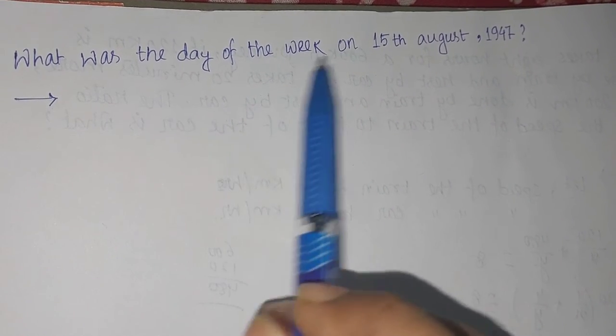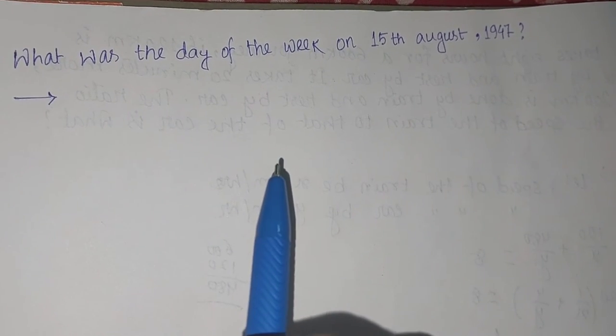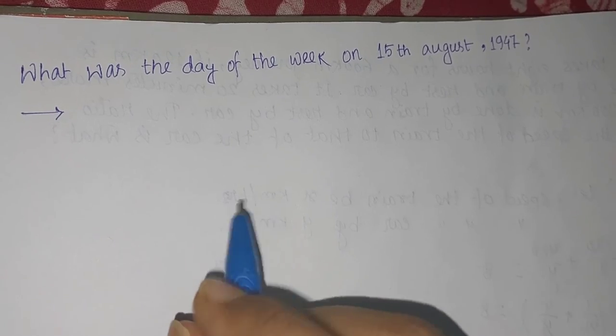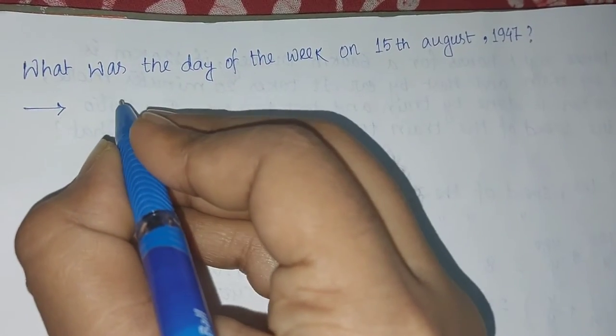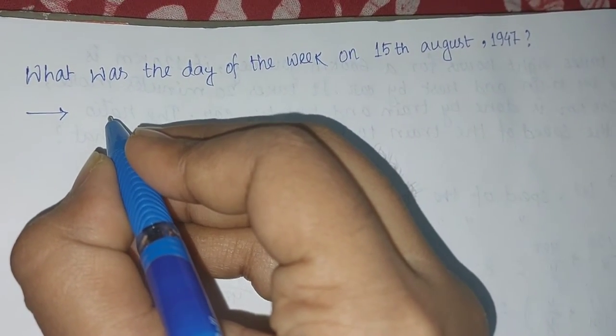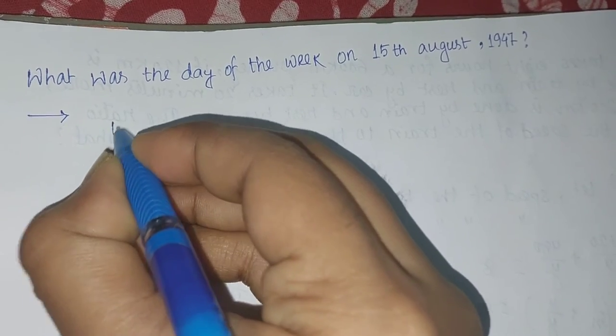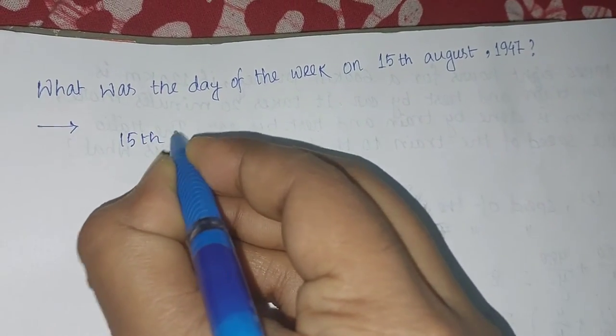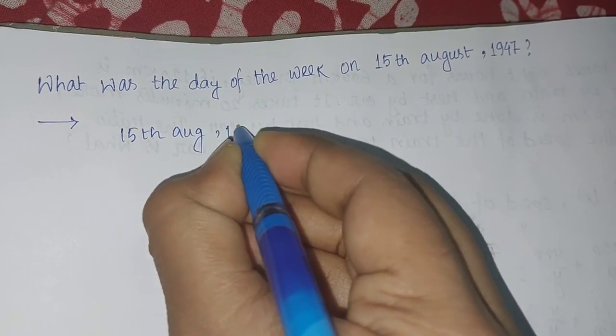It's a one line question. See, what was the day of the week on 15th August 1947? Now how will we proceed for the solution? You know that 15 August 1947, if we write that 15 August 1947...